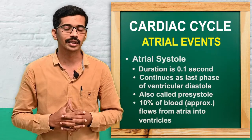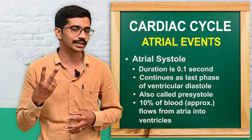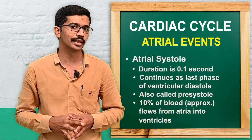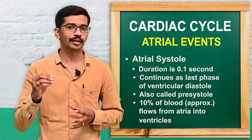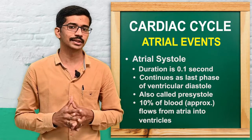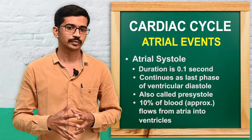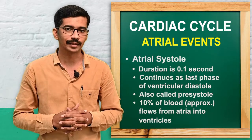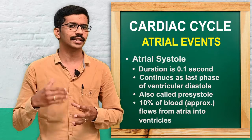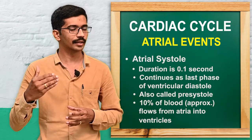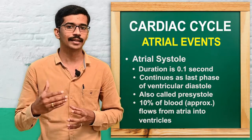Now we will move to the events of cardiac cycle. There are mainly two events that take place in the cardiac cycle: the first one is atrial events and the second one is ventricular events. In both cases, there is a systole and a diastole. First we will move to the atrial events.